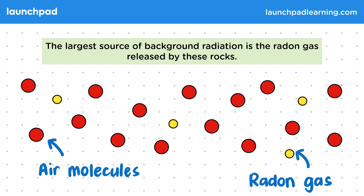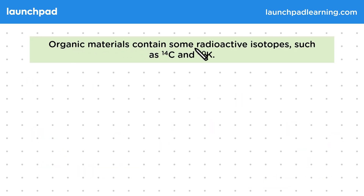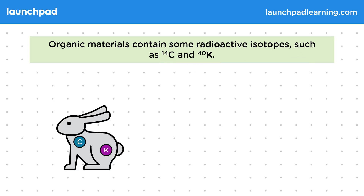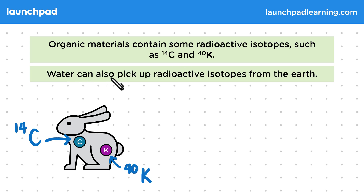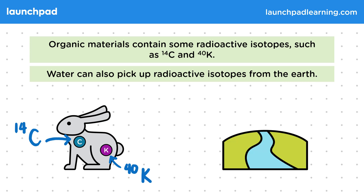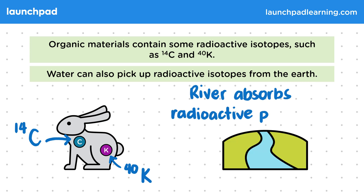So what other sources of background radiation are there on Earth? Organic materials contain some radioactive isotopes such as carbon-14 and potassium-40. These isotopes occur naturally in animals and plants, and they're replaced as quickly as they decay. Water can also pick up radioactive isotopes from the Earth, so isotopes get into rivers as they're absorbed from the rocks and soil.